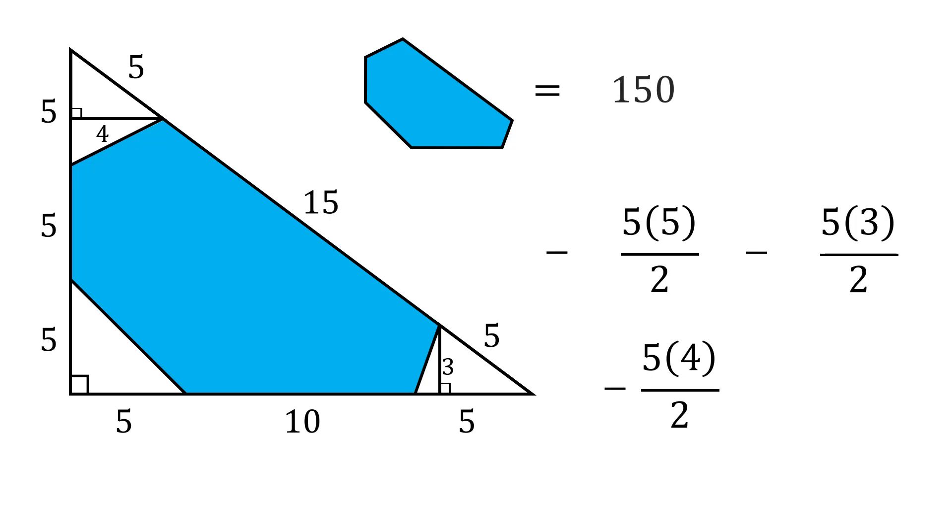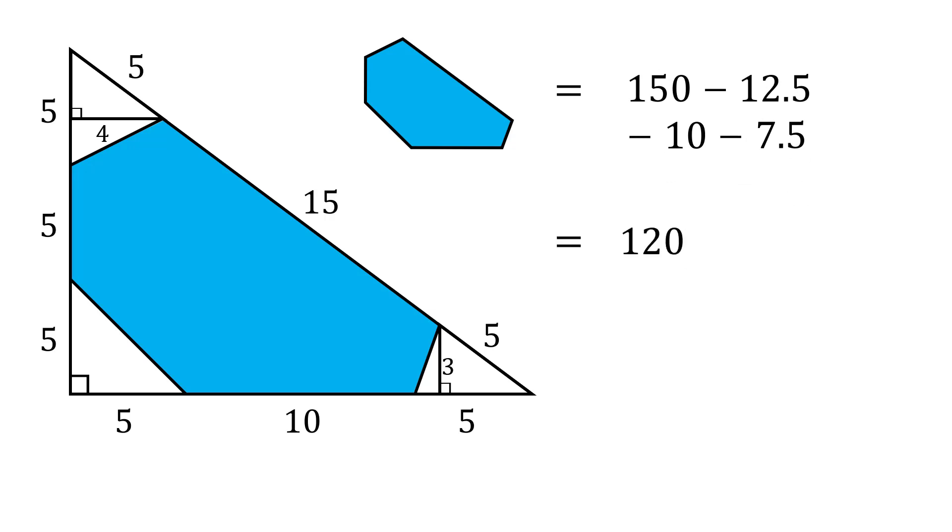We can then carefully calculate each area. Then we simply need to do this subtraction, and we get that the area of the hexagon is equal to 120. And that's the answer.